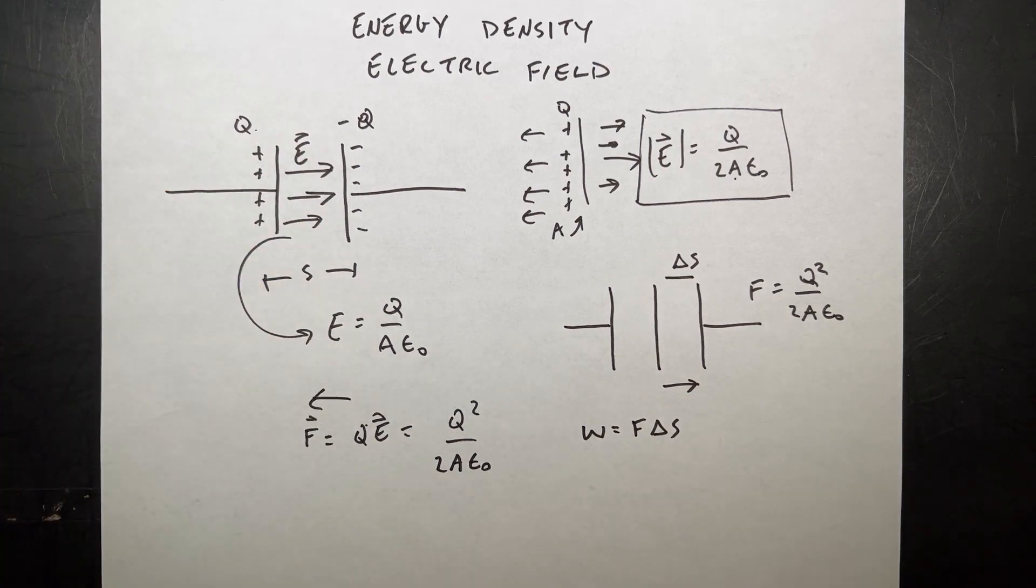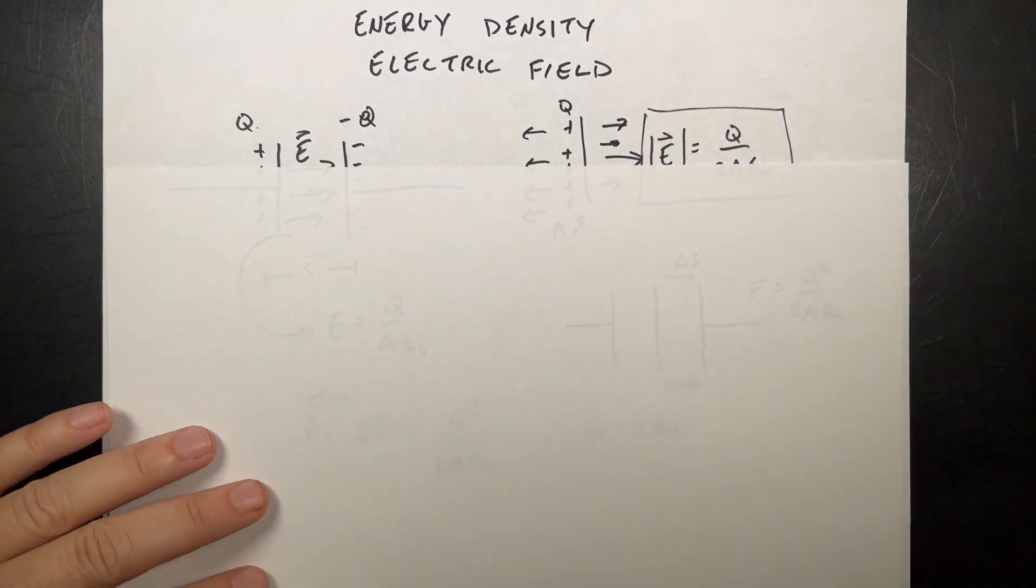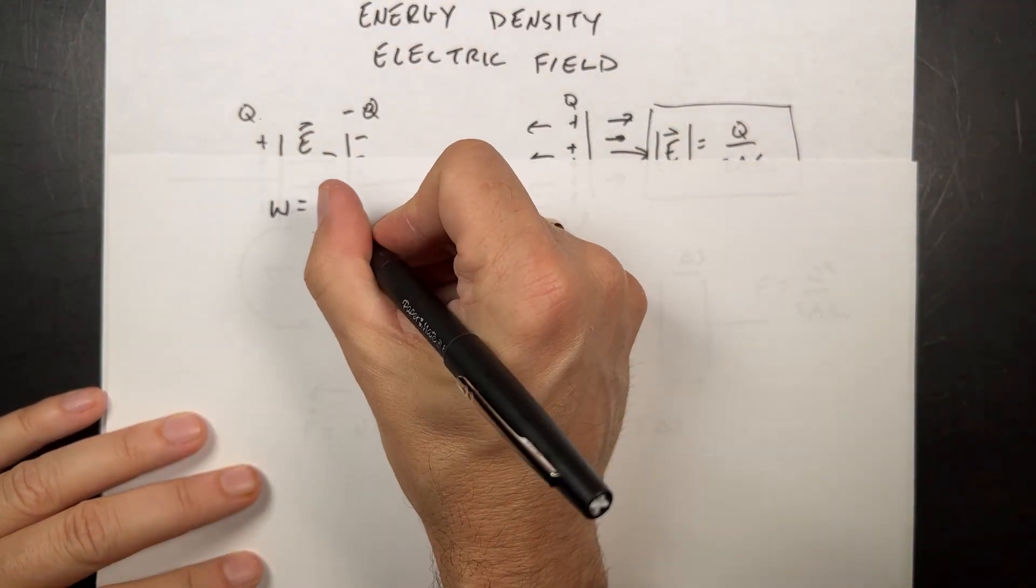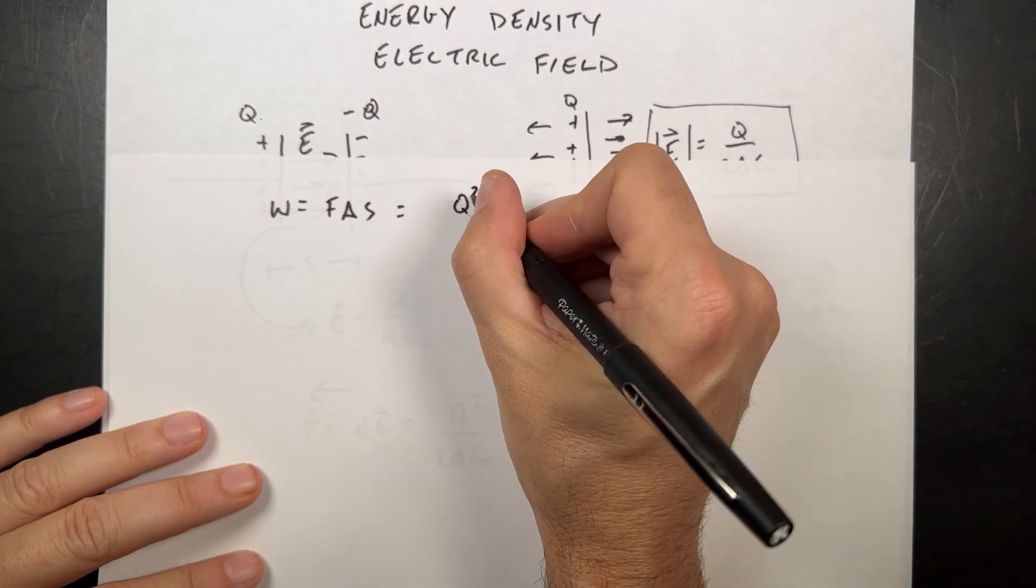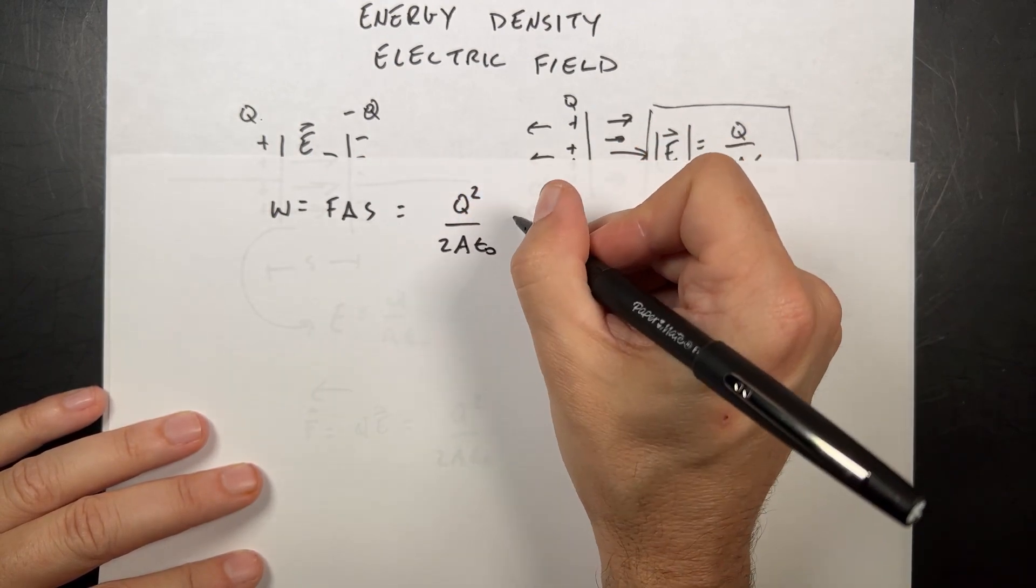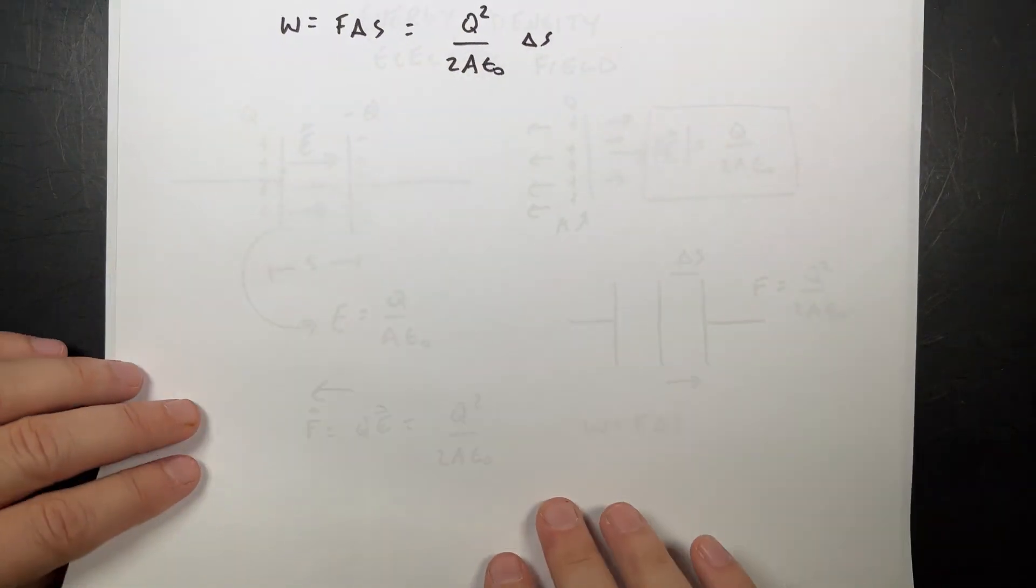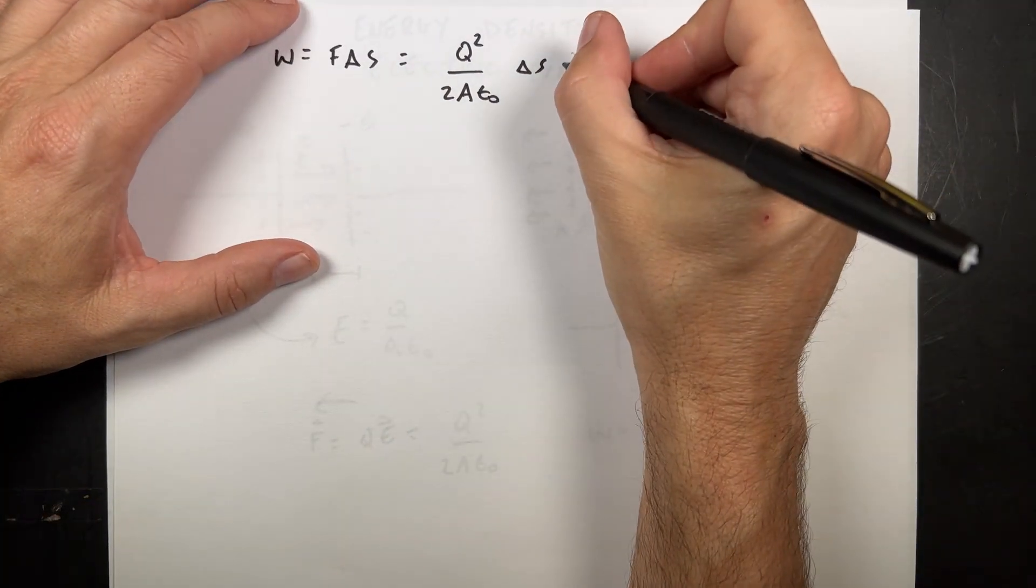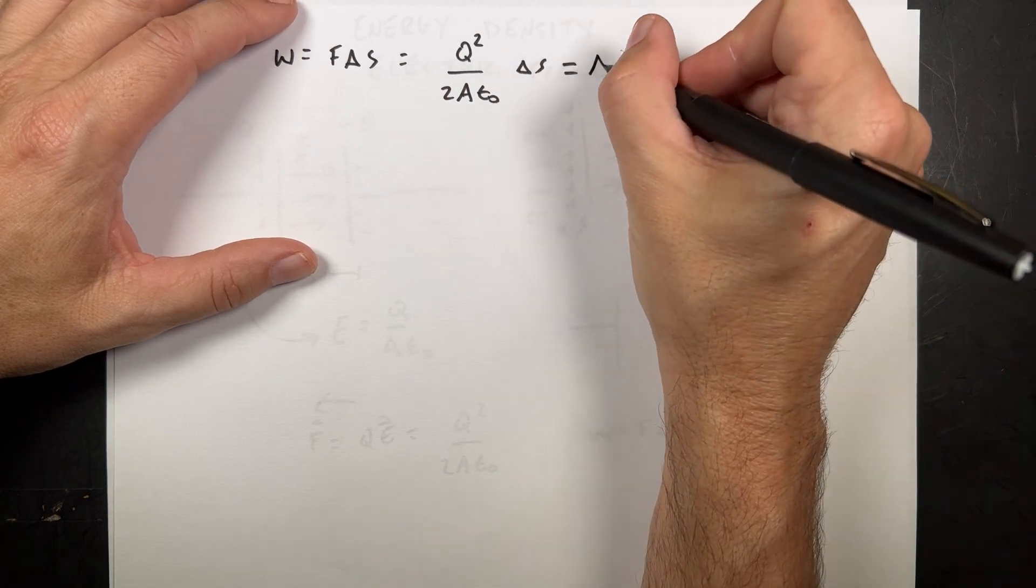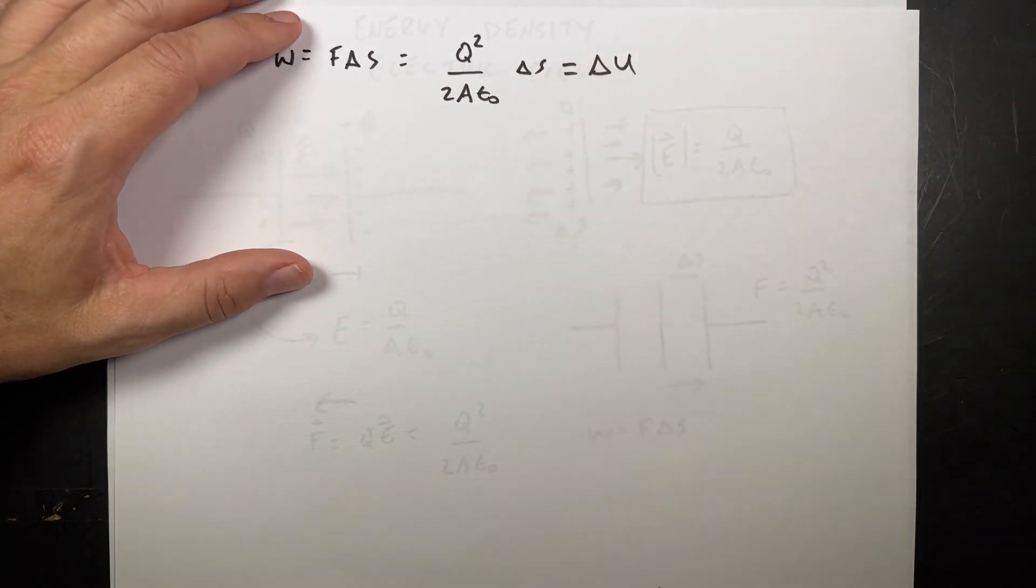And I can write that work as this. So let's start a new piece of paper because I'm running out of room here. So I'm going to say the work is F delta S, which is going to be Q squared over 2A epsilon naught delta S. That's the work done. And that's going to go into the change in electric potential energy.